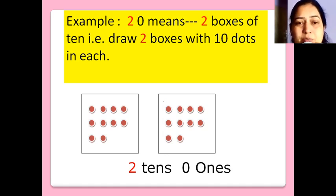As it's a tens box, I told you that you have to draw 10 dots inside. 1, 2, 3, 4, 5, 6, 7, 8, 9 and 10. So, you have got 2 tens here.